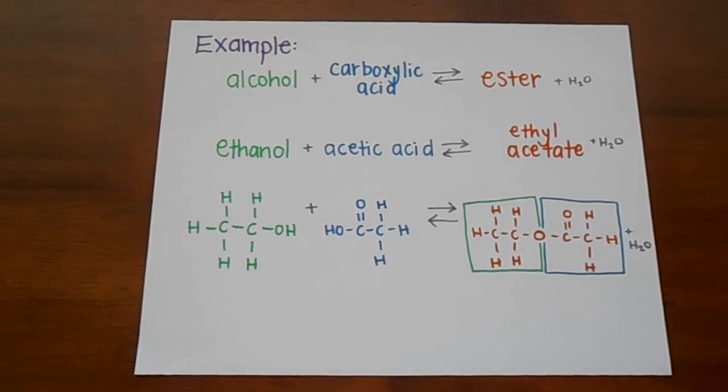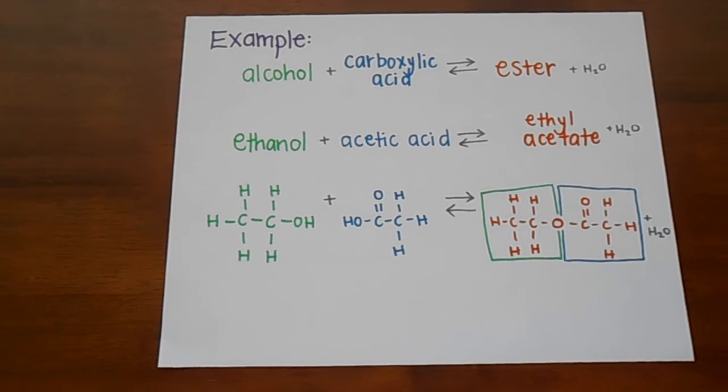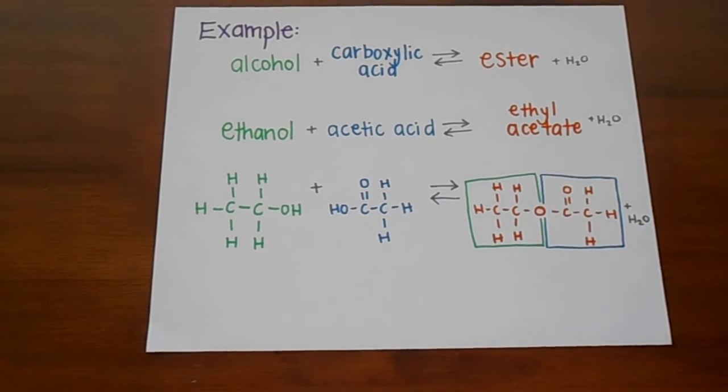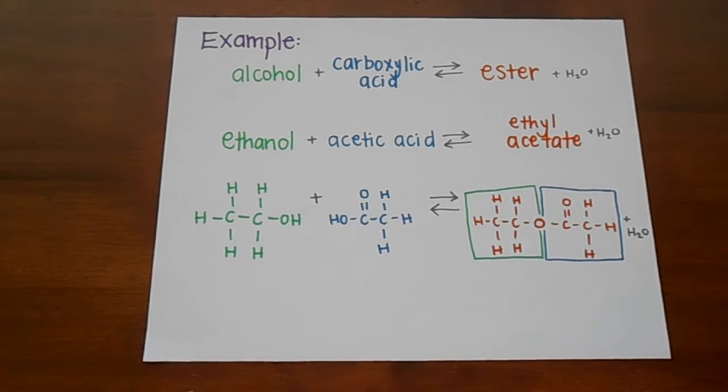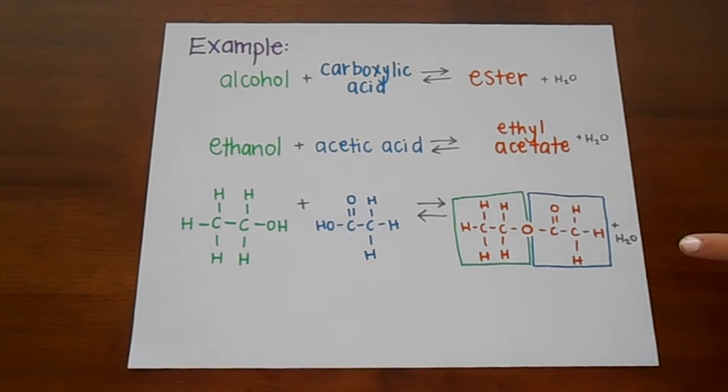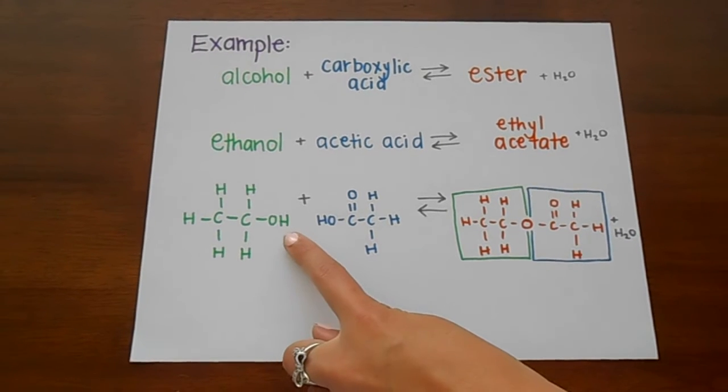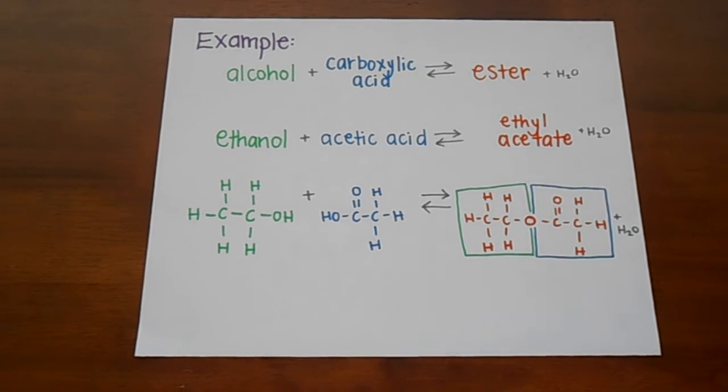Now to combine them, we will take out this and this OH and use a single O to connect the two hydrocarbons. That's it. There's your ester. Now you see the H2O at the end. That came from this OH and that OH when we took them out.